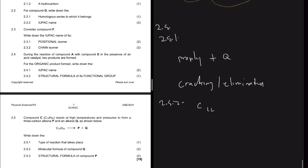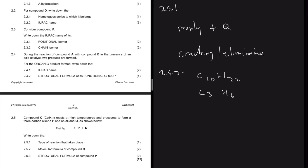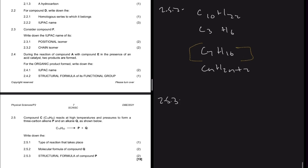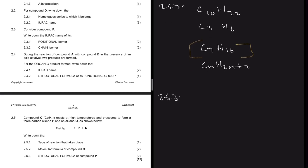For 2.5.2, the molecular formula of compound Q. We start with 10 carbons and 22 hydrogens. Compound P is a three-carbon alkene, so using the formula CnH2n with n=3, that gives us C3H6. Subtracting: 10 minus 3 carbons leaves 7 carbons, and 22 minus 6 hydrogens leaves 16 hydrogens. Using CnH(2n+2) for an alkane, that gives us C7H16 as the molecular formula of compound Q.